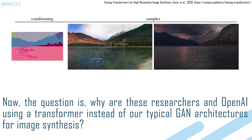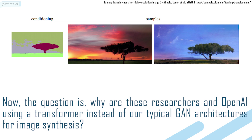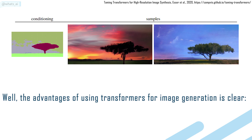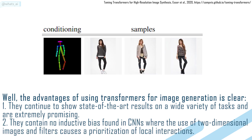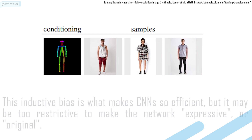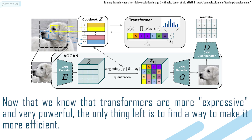Now the question is, why are these researchers and OpenAI using a transformer instead of typical GAN architectures for image synthesis? The advantages of using transformers for image generation are clear — they continue to show state-of-the-art results on a wide variety of tasks and are extremely promising. They contain no inductive bias found in CNNs, where the use of two-dimensional images and filters causes a prioritization of local interactions. This inductive bias is what makes CNNs so efficient, but it may be too restrictive to make the network expressive or original. Now that we know that transformers are more expressive and very powerful, the only thing left is to find a way to make them more efficient.